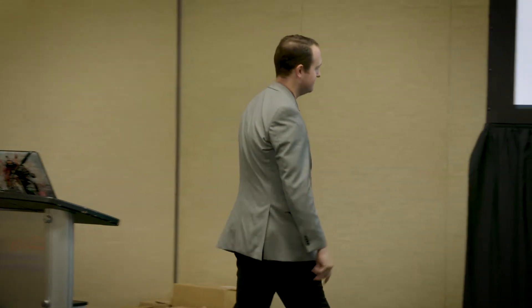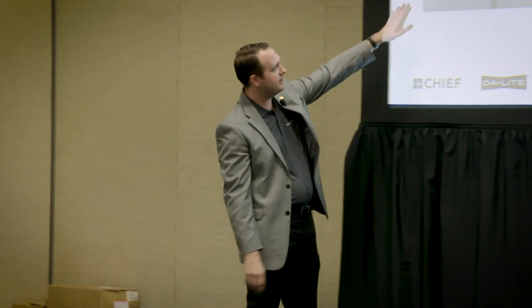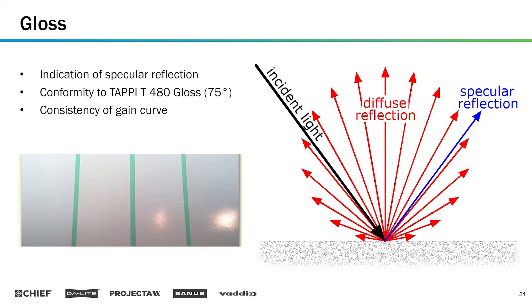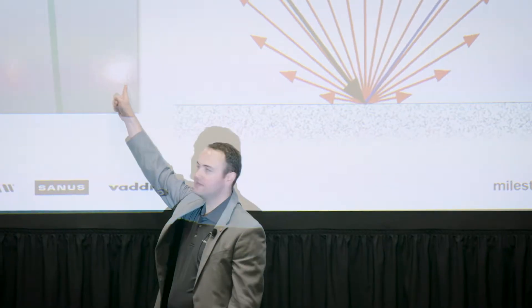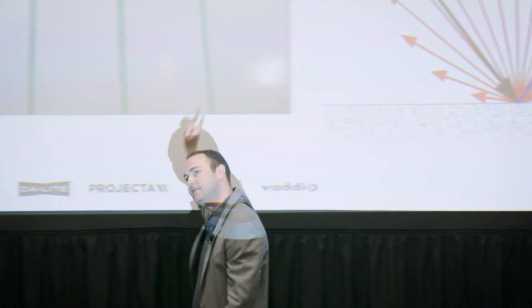We want matte because we want the screen — hopefully like this type of pattern — to be able to diffuse-reflect the light, which means it's going off onto all the angles we want to see, versus this black and blue angle right here, which is the mirror-like side of it. You'll end up with a hot spot.